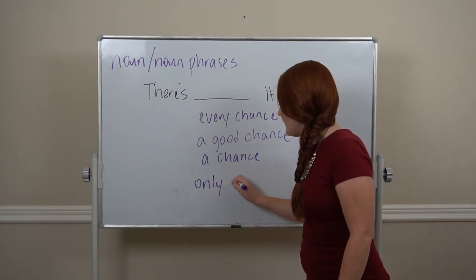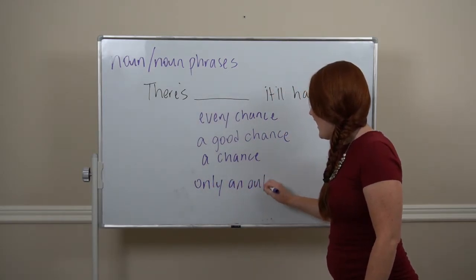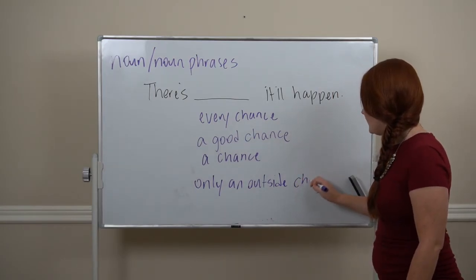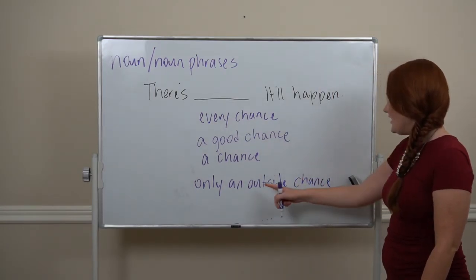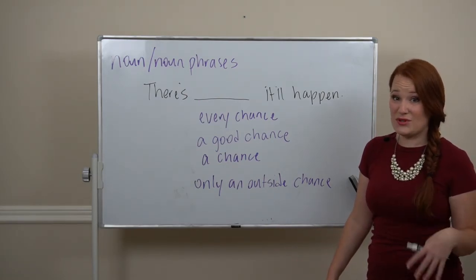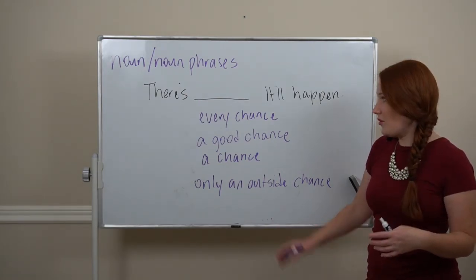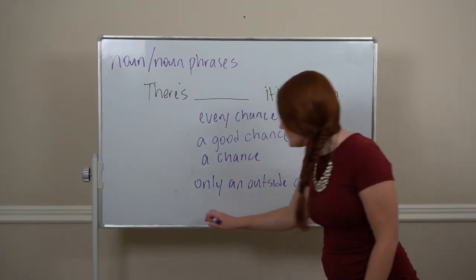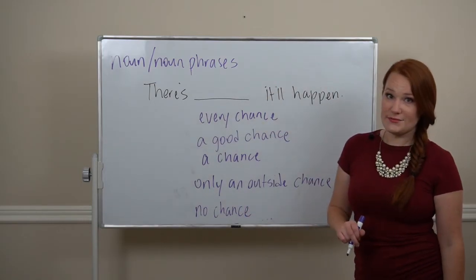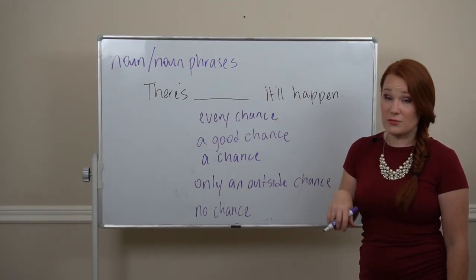We could say there's only an outside chance it'll happen. Only an outside chance is like, it's really rare. It probably won't happen. Or all the way down at zero. There's no chance it'll happen. Zero percent.